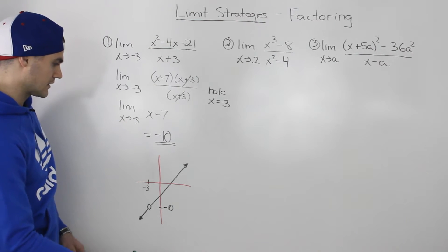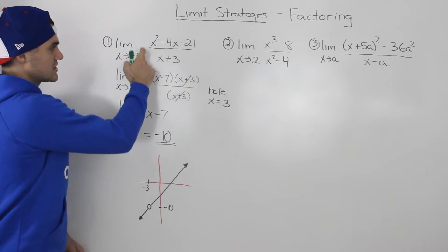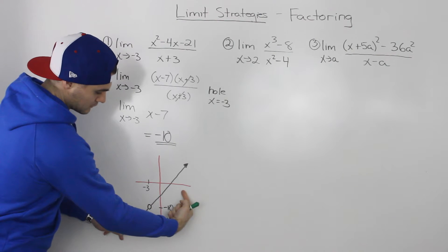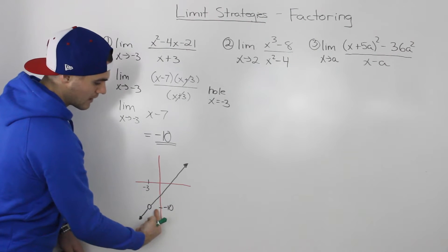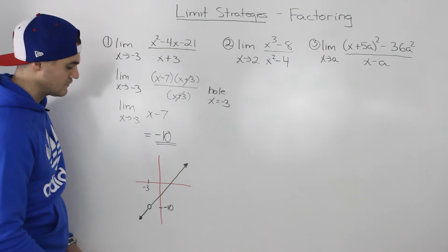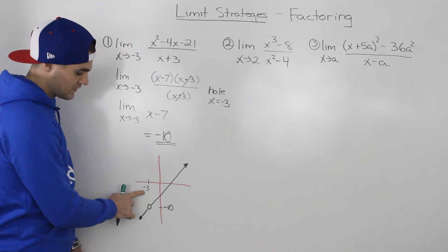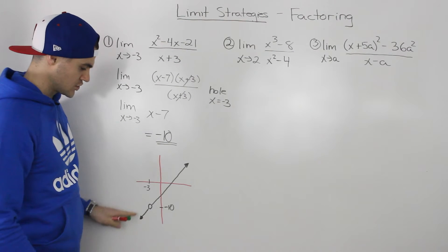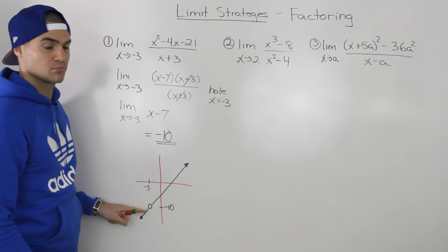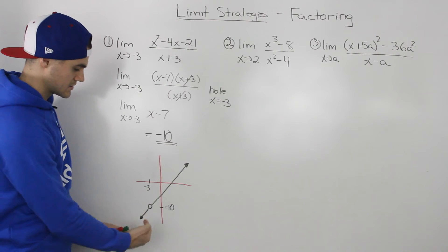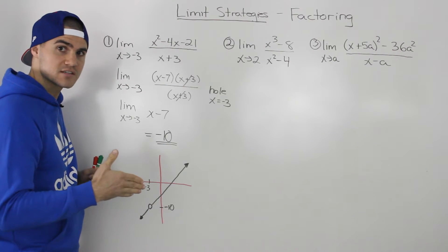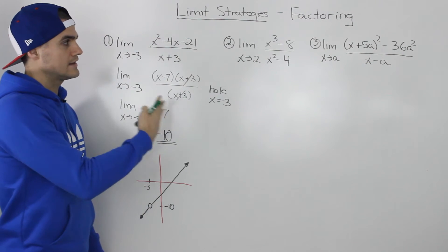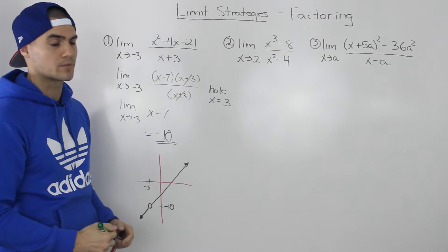So the limit of this function — if we approach the x value of negative 3 from both sides — we're approaching that y value of negative 10, even though the function is undefined at x equals negative 3. As we've mentioned, a function doesn't have to be defined at a certain point for the limit to exist there, because it's all about the y value that the function is approaching.